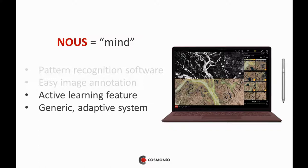In addition, an active learning feature is integrated in NOOS, which makes it possible to train faster and more efficiently on a smaller amount of data. NOOS also enables non-expert users to customize the applicability of the network depending on the image data that is used. The software can be optimized on the fly, which makes it intuitive and adaptive.